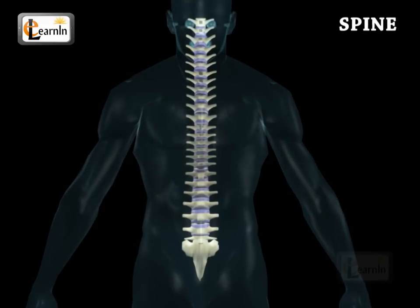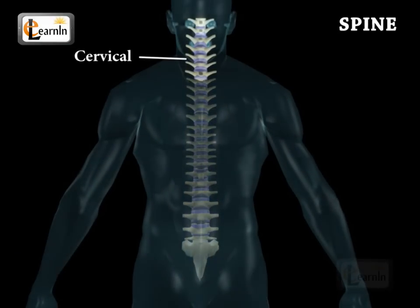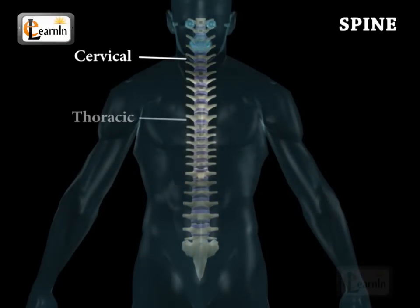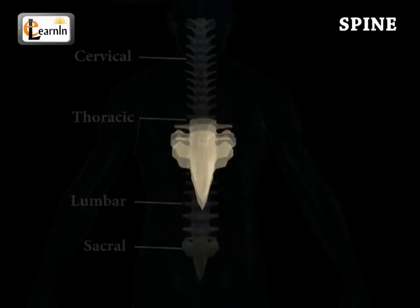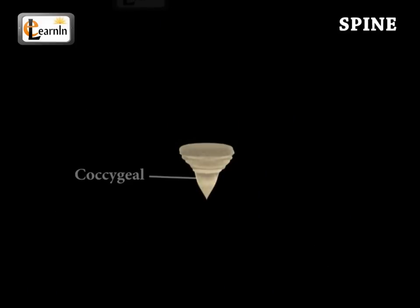The entire vertebral column is differentiated into cervical, thoracic, lumbar, sacral, and coccygeal regions, starting from the skull.